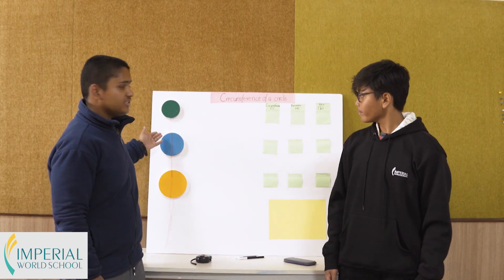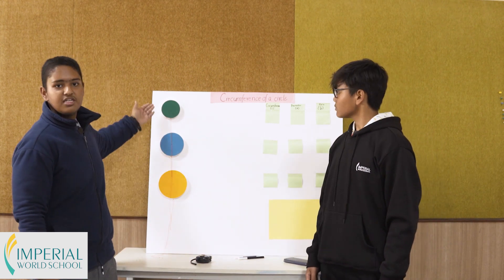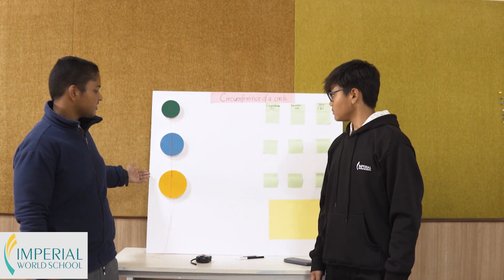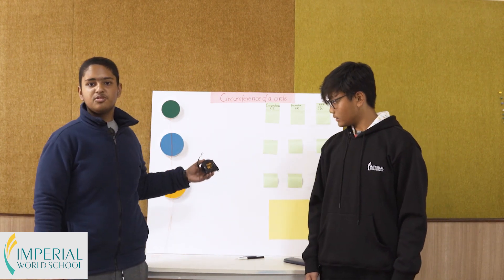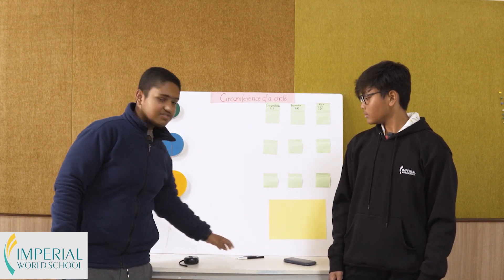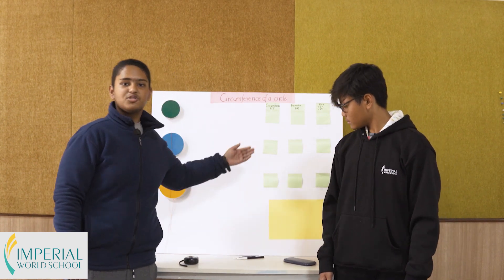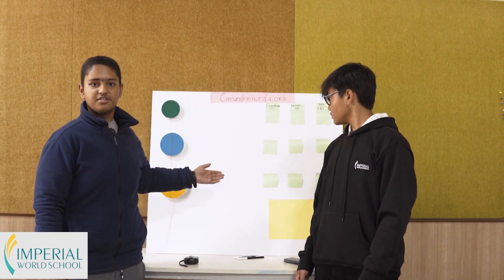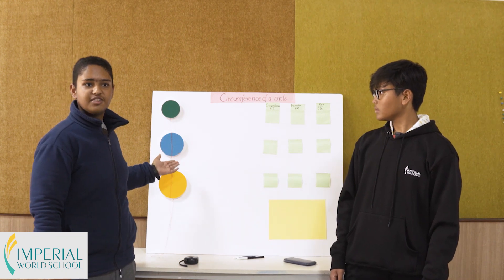As you can see here we have three circles each different in size, and we have a measuring tape to measure these circles. We also have sketch pen and a calculator to help us with this project. So let's begin with the measuring.